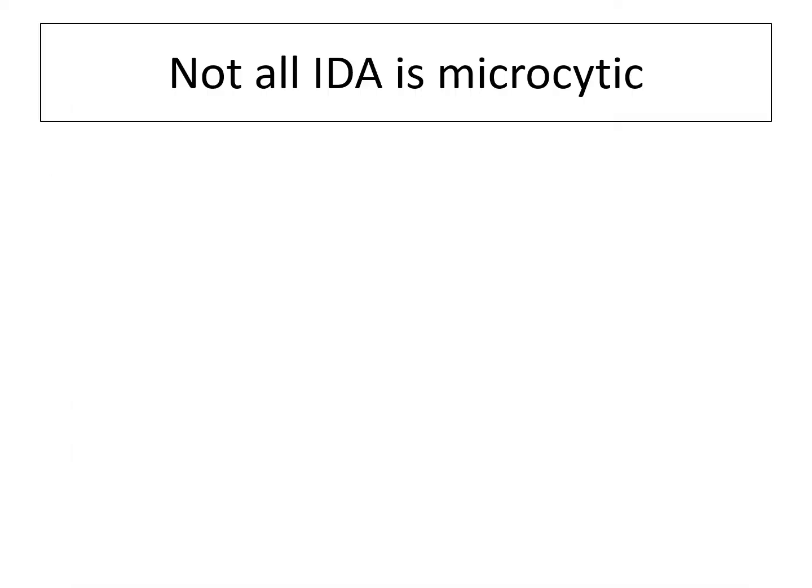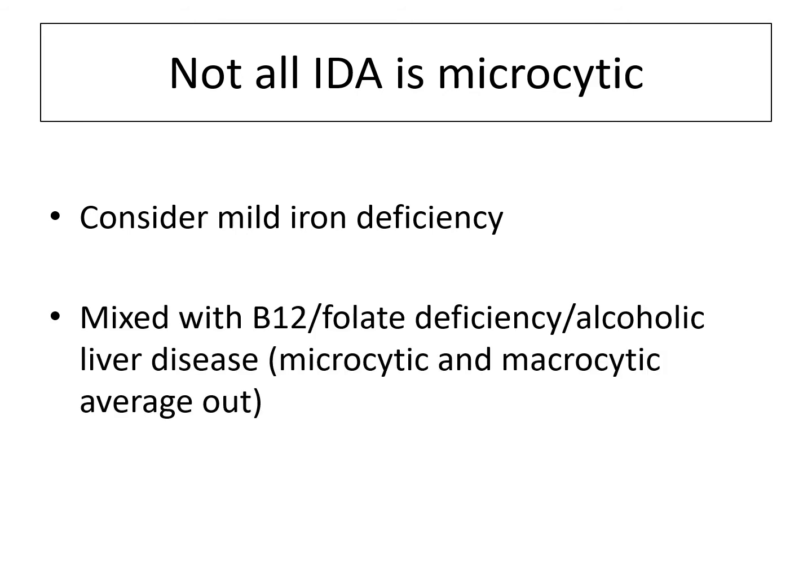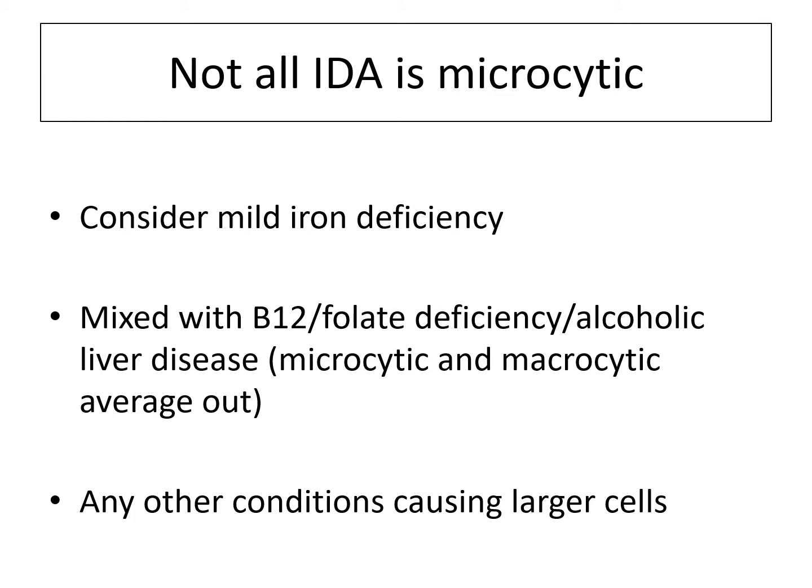Number three: not all iron deficiency anemia is going to be microcytic. Just because someone has a normocytic or macrocytic picture, do not rule out iron deficiency. They might just have mild iron deficiency. More likely is to have it mixed with something else — a B12 or folate deficiency, or very commonly alcoholic liver disease with chronic bleeding. The microcytic and macrocytic cells average out in the counters and give us a normal value. Any other conditions causing larger cells can do the same.